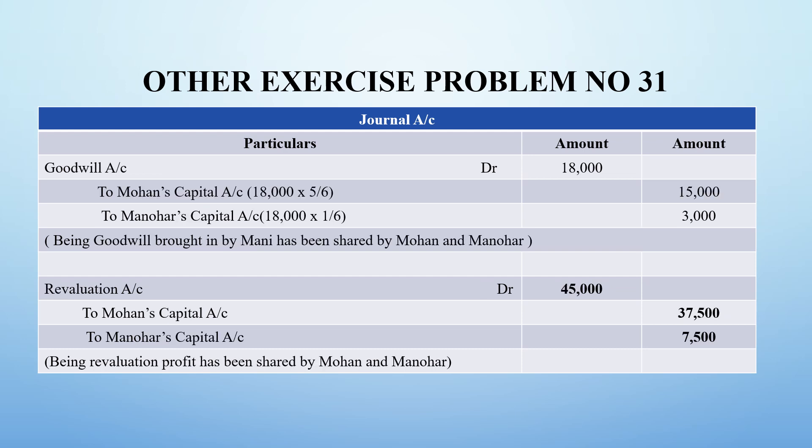Next, Mani's goodwill of 18,000 is distributed to Mohan and Manohar based on the sacrificing ratio. Mohan gets 15,000 and Manohar gets 3,000. Then for the revaluation profit of 45,000, it is split in old profit sharing ratio - Mohan gets 37,500 (45,000 into 5 by 6) and Manohar gets 7,500 (45,000 into 1 by 6).